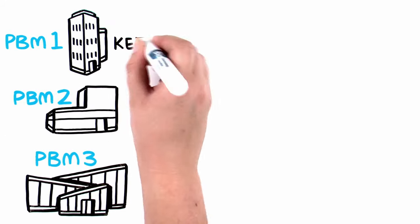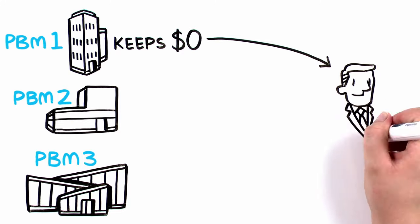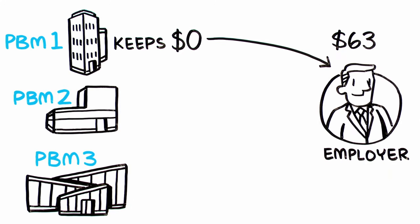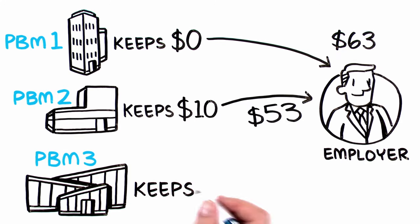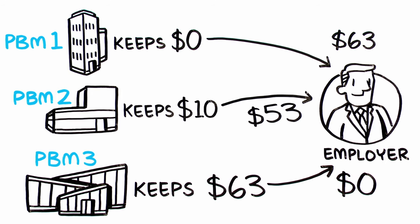What PBMs do with the rebate varies. They may pass it to your employer, keep some of it, or keep all of it. The amount the PBM retains becomes part of their profit.